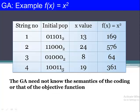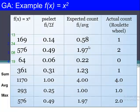The initial population is selected randomly, which may not be optimal. These are four randomly selected numbers from the solution space: 13, 24, 8, and 19. Now for step two, we calculate fitness using the objective function f(x) = x². So 13² = 169, 24² = 576, 8² = 64, and 19² = 361.